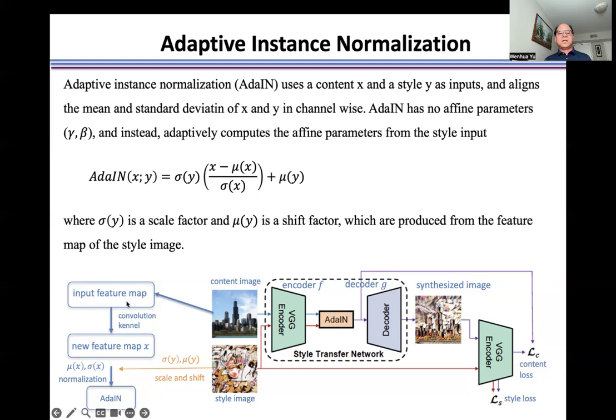The AdaIN layer uses feature maps as input. After convolution, we use μ_X and σ_X to normalize the feature map, then use σ_Y and μ_Y to scale and shift it.